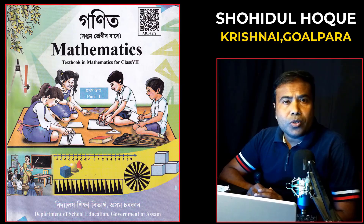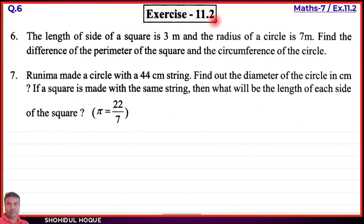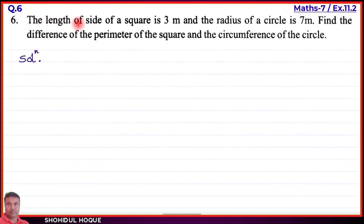Mathematics class 7, new book part 2, exercise 11.2, English medium, question number 6 and 7. The question: the length of side of a square is 3 meters and the radius of a circle is 7 meters. Find the difference of the perimeter of the square and the circumference of the circle.